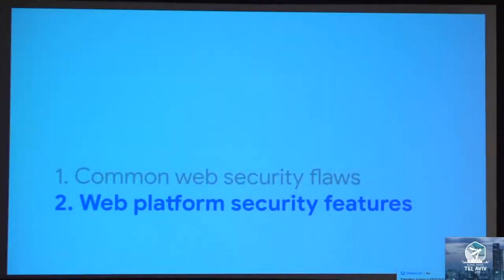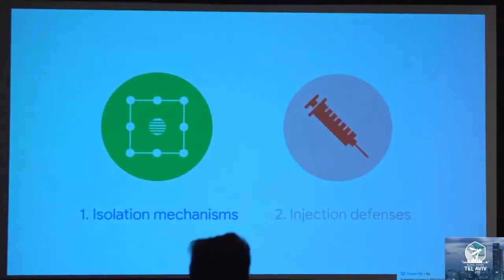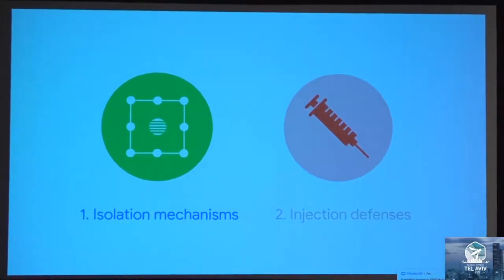What we want to do now is address these classes of bugs in the web platform — in the browser. There are a couple of new things that have already launched and are coming up soon. As I mentioned, we've basically divided this into two categories: isolation mechanisms and injection defenses in the browser. In this talk at OWASP, I will mostly focus on the isolation part, mostly because of timing reasons. If you want to see the full talk, you can get the recording from Google I/O. So let's start with isolation.